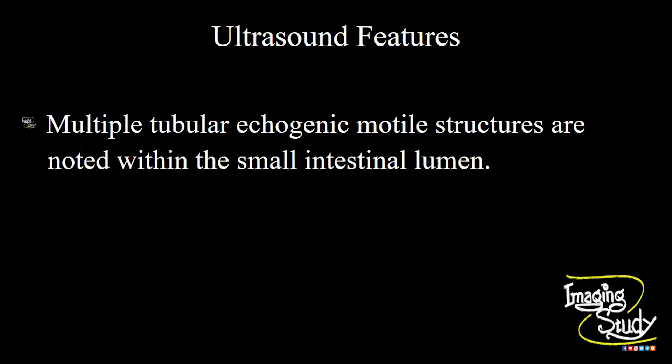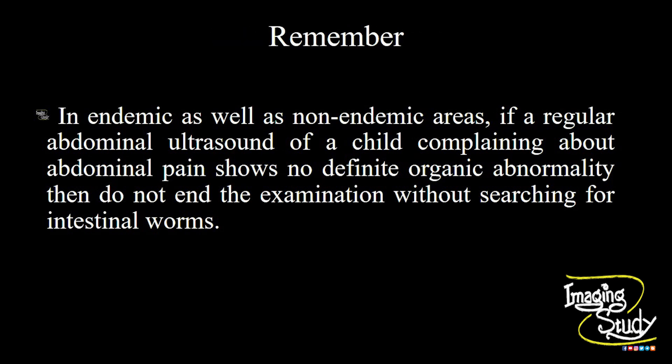In summary, multiple tubular echogenic motile structures are noted within the small intestinal lumen. The take-home message: in endemic as well as non-endemic areas, if a regular abdominal ultrasound with low frequency of a child complaining about abdominal pain shows no definite organic abnormality, do not end the examination without searching for intestinal worms with a high frequency linear transducer. You may get surprisingly moving worm-like or noodle-like structures within the intestinal loops.